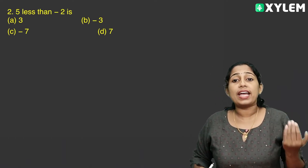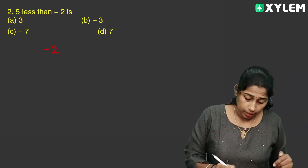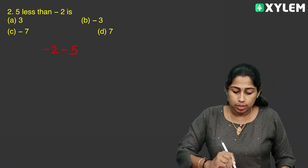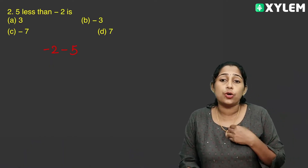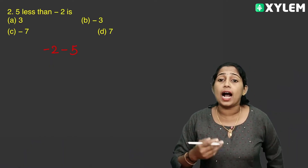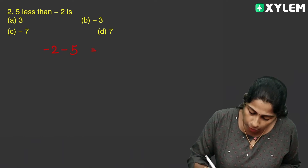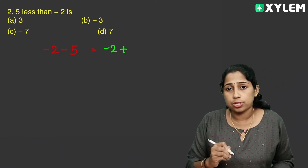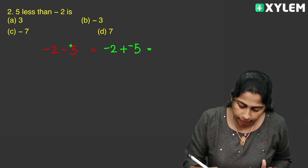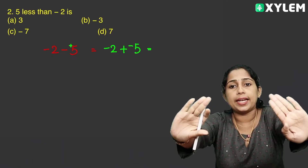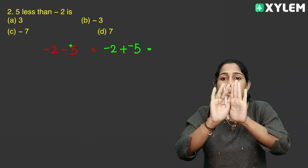Next question: 5 less than minus 2. Which answer? Minus 2 minus 5. In subtraction, we add the additive inverse of the second number. The additive inverse of plus 5 is minus 5. So minus 2 plus minus 5 — same signs, so we add: 2 plus 5 is 7, and the sign is minus. Minus 7 is the answer.